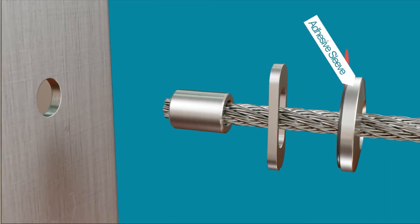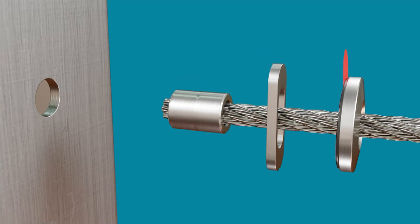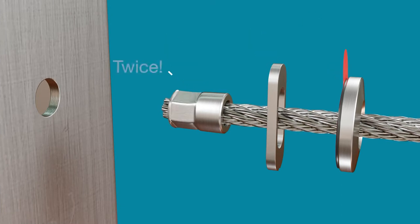Slide the cable first through the adhesive sleeve, then the washer, and finally the cable stop. Then, using your crimping tool, crimp the cable stop twice.